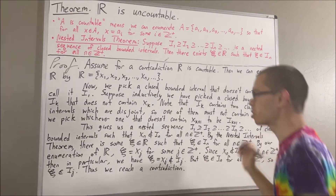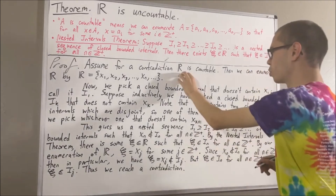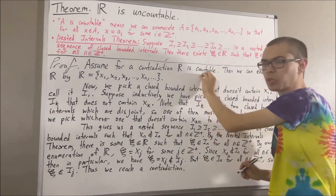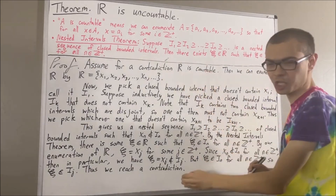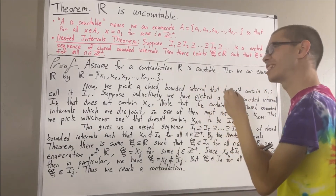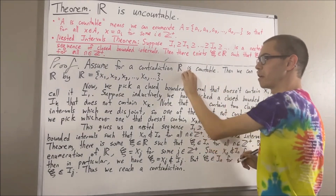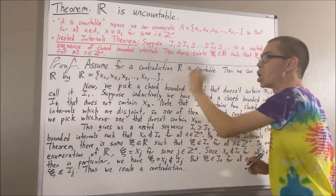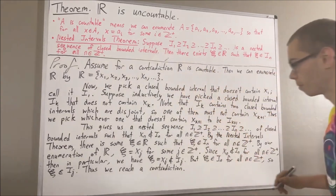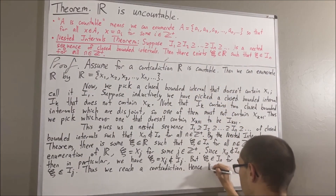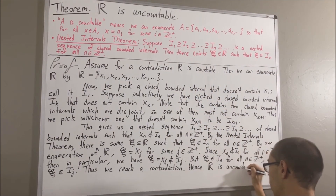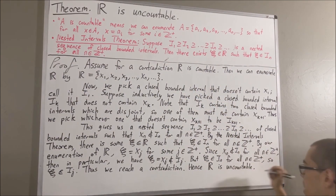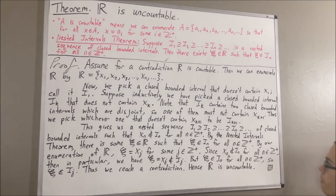Our assumption that the set of real numbers is countable leads to a contradiction. So we must instead have that the set of real numbers is uncountable. And so, this completes the proof.